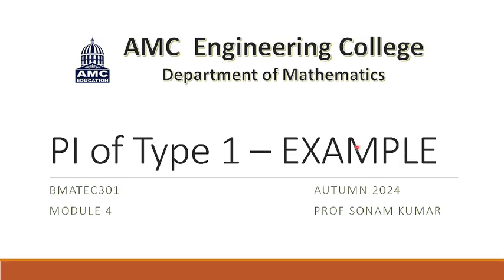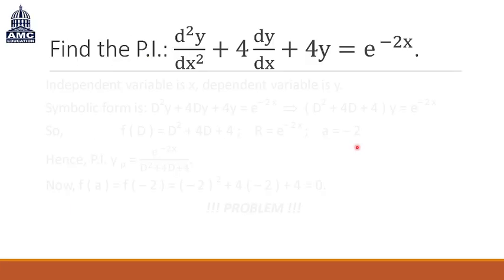Hello and welcome to yet another example description of the particular integral of type 1. We are planning to find out the particular integral for this non-homogeneous linear differential equation with constant coefficients. The coefficients here are 1, 4, and 4 — they are constants. It is linear because the terms are d²y/dx², the first order derivative, and the function itself. It is non-homogeneous because on the right hand side we have a function purely in x — specifically, e raised to the power minus 2x.